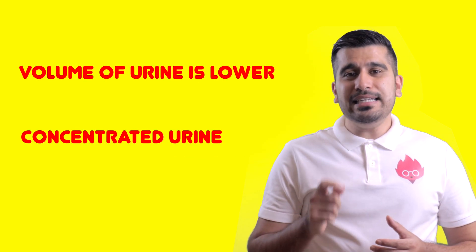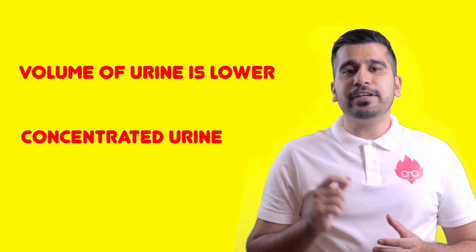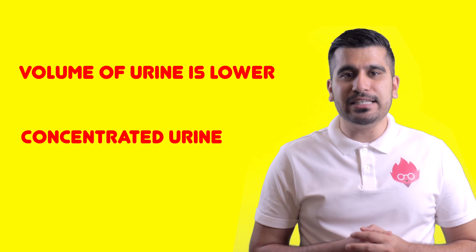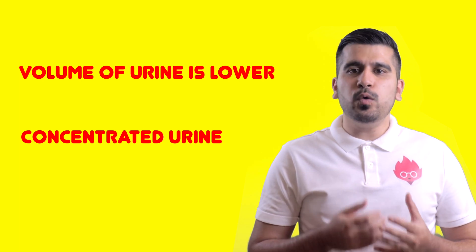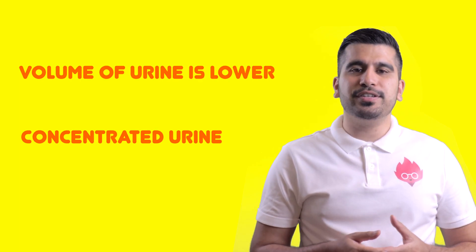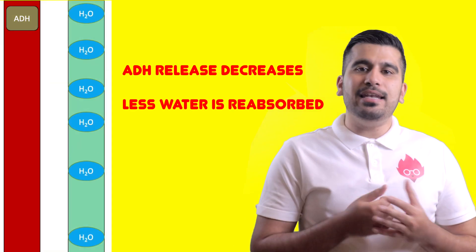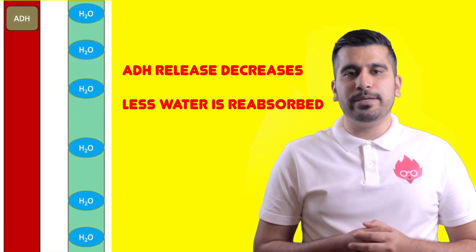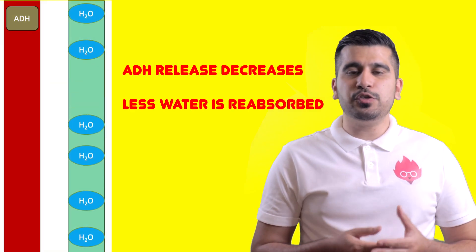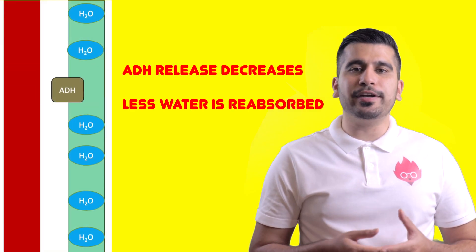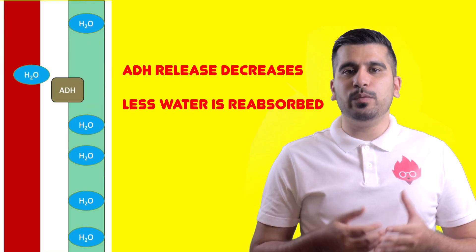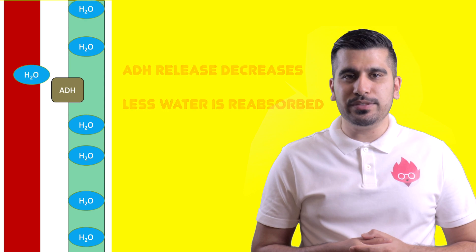This results in more water being reabsorbed into the blood, and you end up with little and very concentrated urine. When water concentration is high in your blood, less water is reabsorbed, making you produce urine in greater volume which is more diluted.